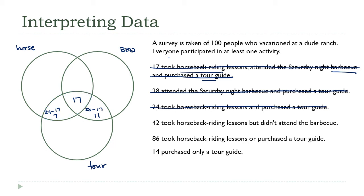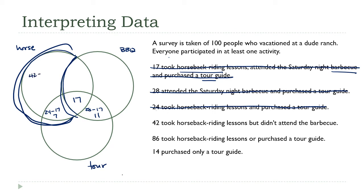42 took horseback riding lessons but didn't attend the barbecue. That's this group here. I'm always looking for a situation where I know every subregion except one, so I can subtract to find the missing value. This gives us 42 minus 7, which is 35.